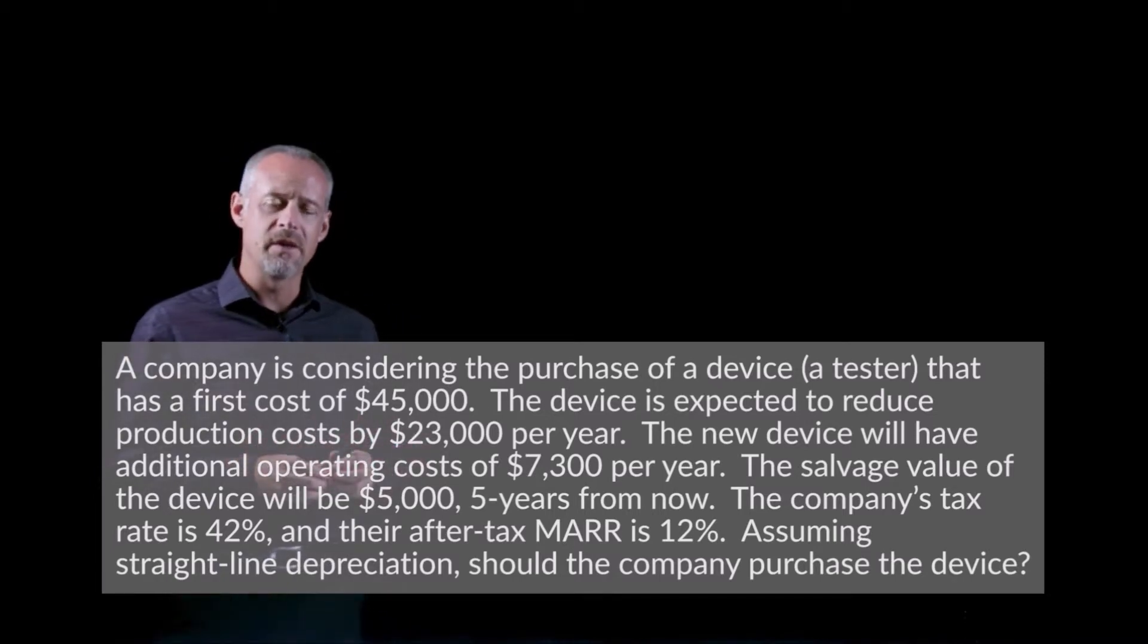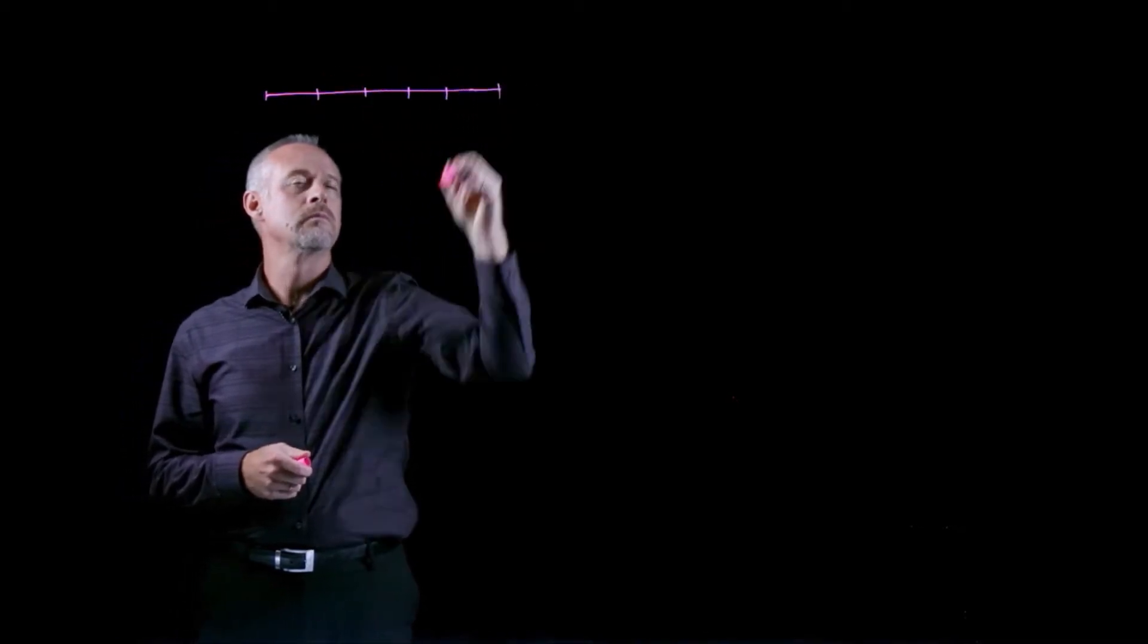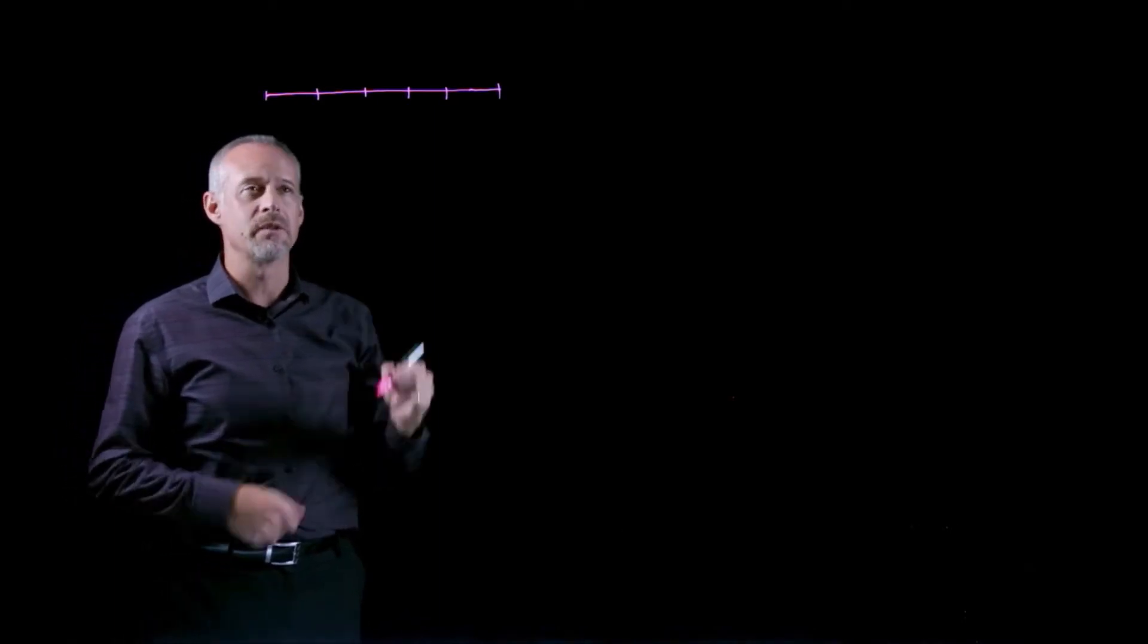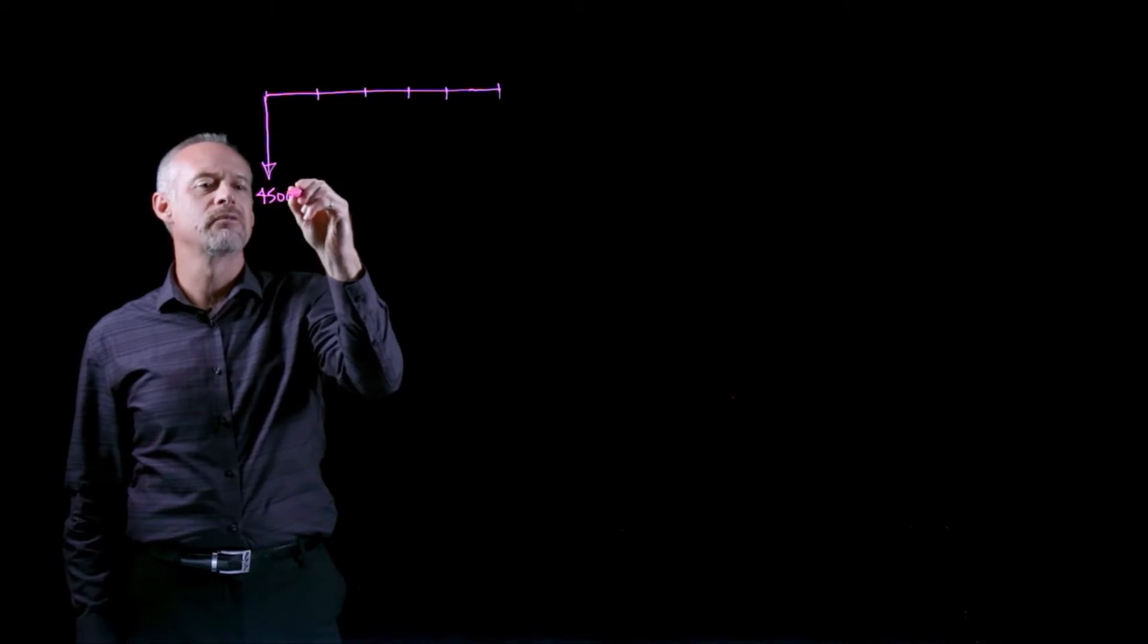In this problem, we learn of a company that is wanting to buy this new tester. The tester has an upfront cost, it will result in some savings, it also has some operating expenses, and we're told the company can sell it at the end of five years for a certain salvage value. So let's go ahead and start the problem with a cash flow diagram. We use a five-year horizon, and we're told that the purchase price of this equipment, which will be a down arrow in our cash flow diagram, is $45,000.